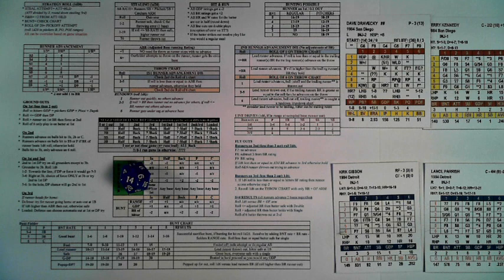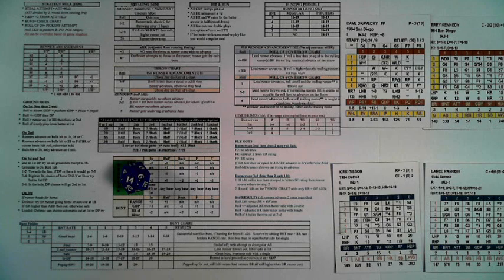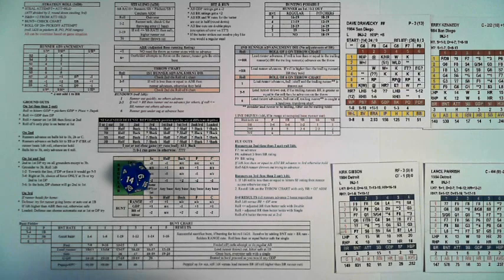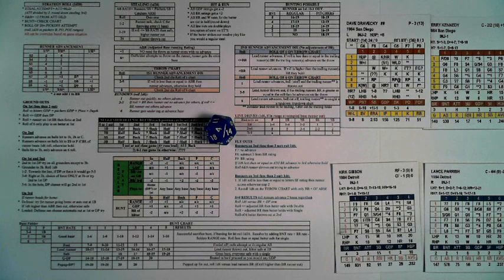If the runner is on second, the adjusted attempt is cut in half for a steal attempt to third. If the runner is on third, it's divided by five, rounded down, for a steal at home — also minus 10 on his SB rating. Whatever the adjusted ATT rating is, if the d20 is less than or equal to that number, the runner attempts to steal. For example, Kurt Gibson is five plus one for a lefty, making it six or lower to attempt.